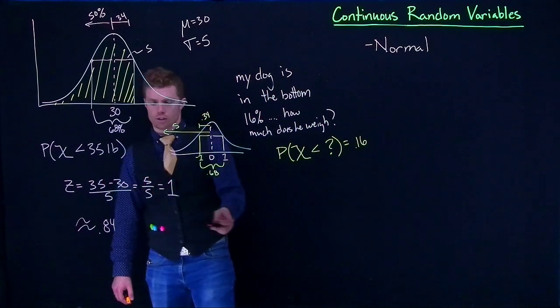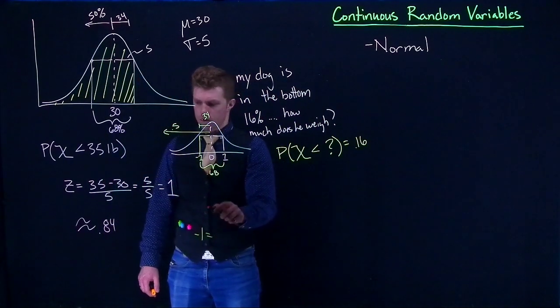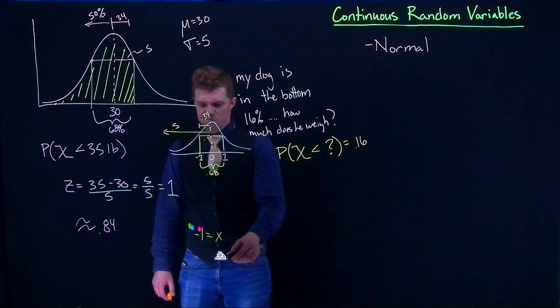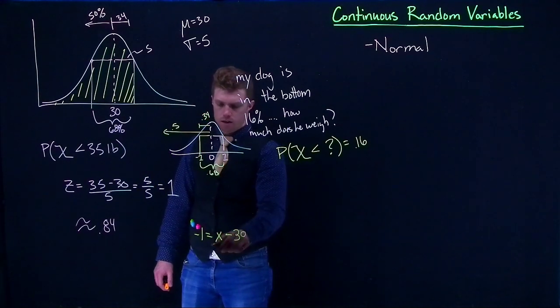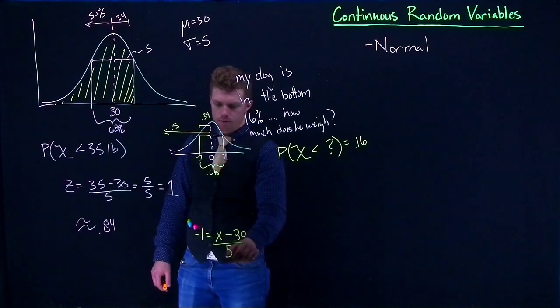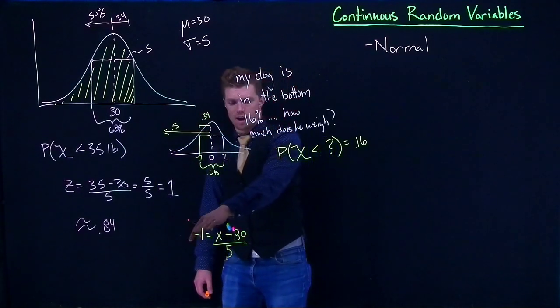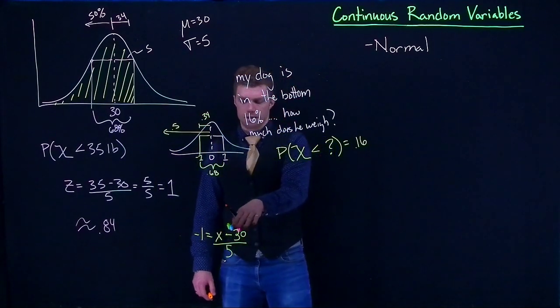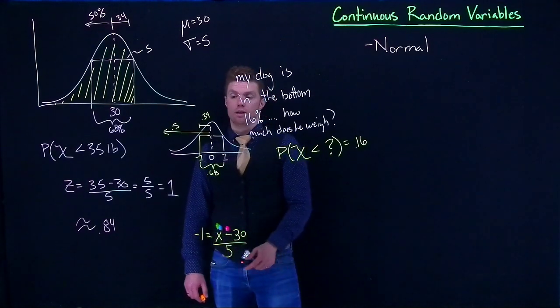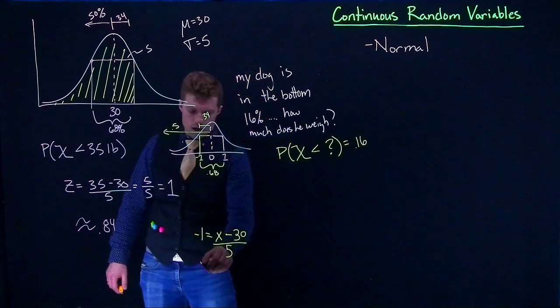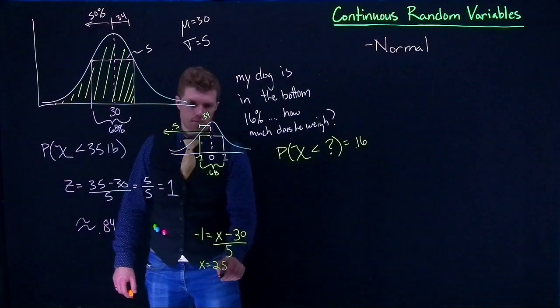And then we can plug it into this equation. So we can say that negative 1 equals our x, our observation, little x. And we're going to minus 30 and divide by 5. So what we can do is we can take 5 and multiply it by both sides. So that goes to 5. And then we can take this guy, so it would be negative 5. We can add 30 to it. That would get us to 25. And so x would equal 25.